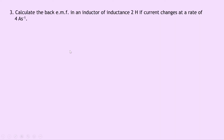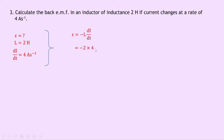Question 3 says to calculate the back EMF in an inductor of inductance 2 Henrys if current changes at a rate of 4 Amperes per second. Writing down what we know: we're trying to find epsilon, L is 2 Henrys, and dI/dt is 4 Amps per second. Our equation for back EMF is epsilon equals minus L times dI/dt. Substituting in the numbers gives us minus 2 times 4, which gives an answer of minus 8 volts.